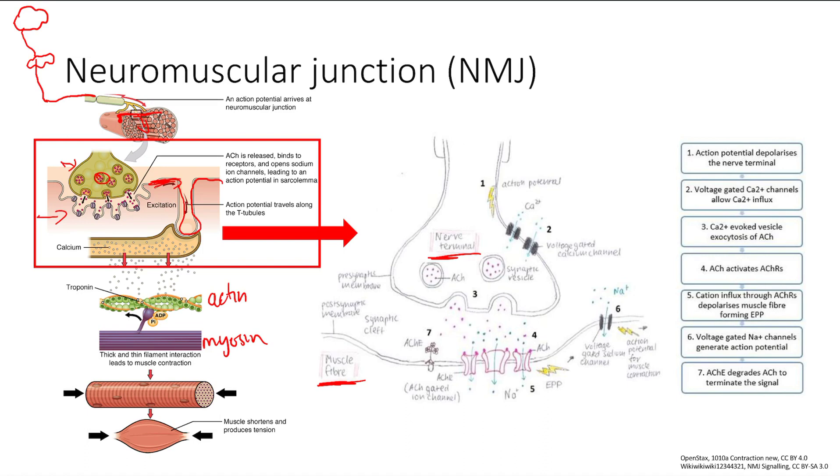So you have voltage-gated calcium channels that sense the depolarization. When they sense that, they open and let calcium come in. Calcium triggers exocytosis of the synaptic vesicles holding the acetylcholine.